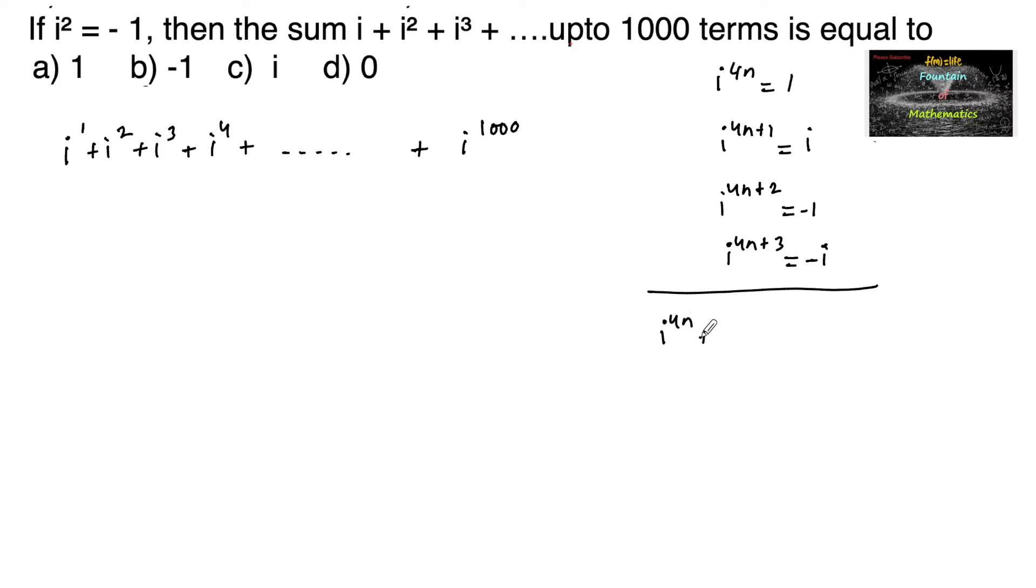i^(4n) + i^(4n+1) + i^(4n+2) + i^(4n+3) equals 1 + i + (-1) + (-i), the sum will be 0.